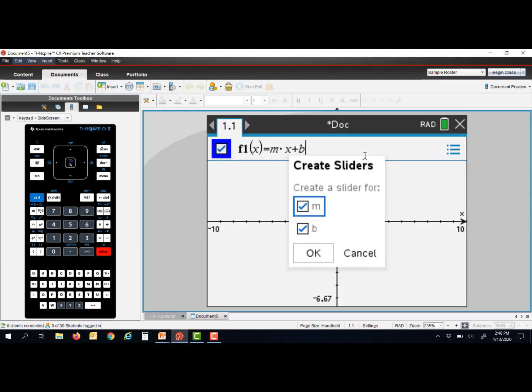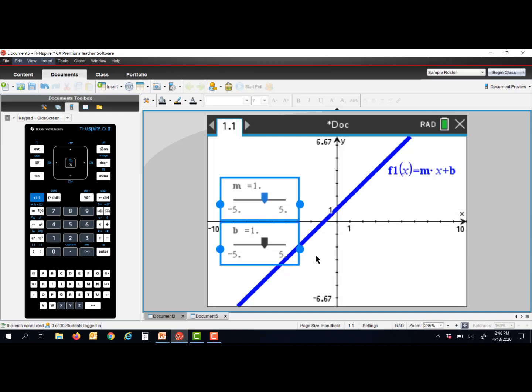I'm going to be prompted and asked if I want to create a slider for both m and b. Once I hit enter, these auto slider boxes are going to be automatically created for me. I'm going to click on the empty part of the screen to deselect those boxes.